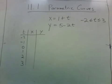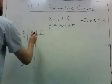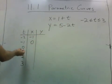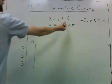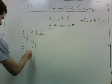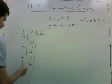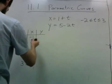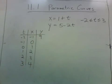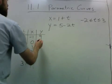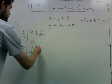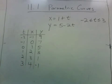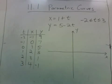So when t is negative 2, x is negative 1. When t is negative 1, x is 0. When t is 0, x is 1, and these just go up from there. For y: when t is negative 2, y is 9. When t is negative 1, we get 7. And if you keep going, we get 5, 3, 1, negative 1. To plot this, we just plot all the points.